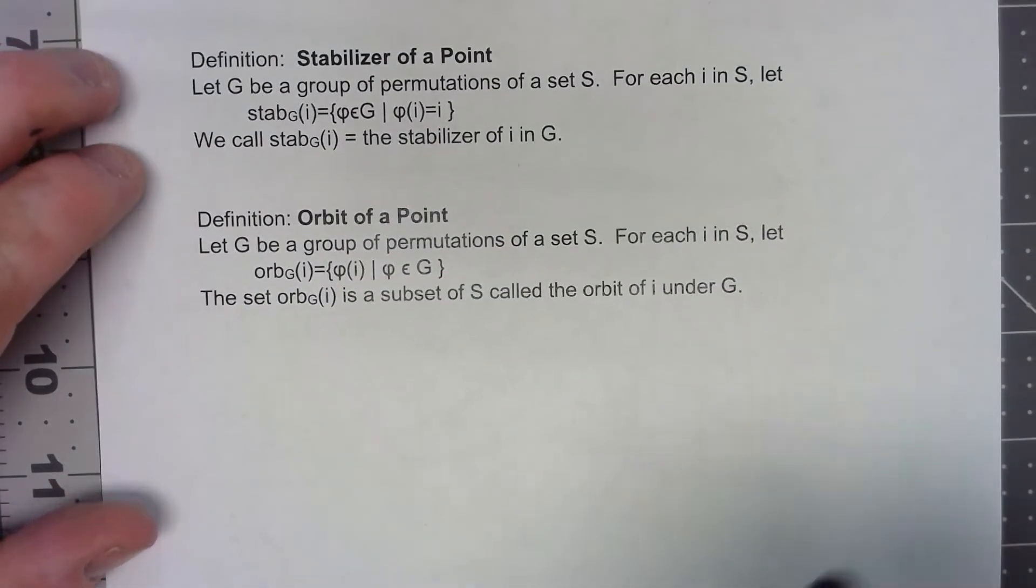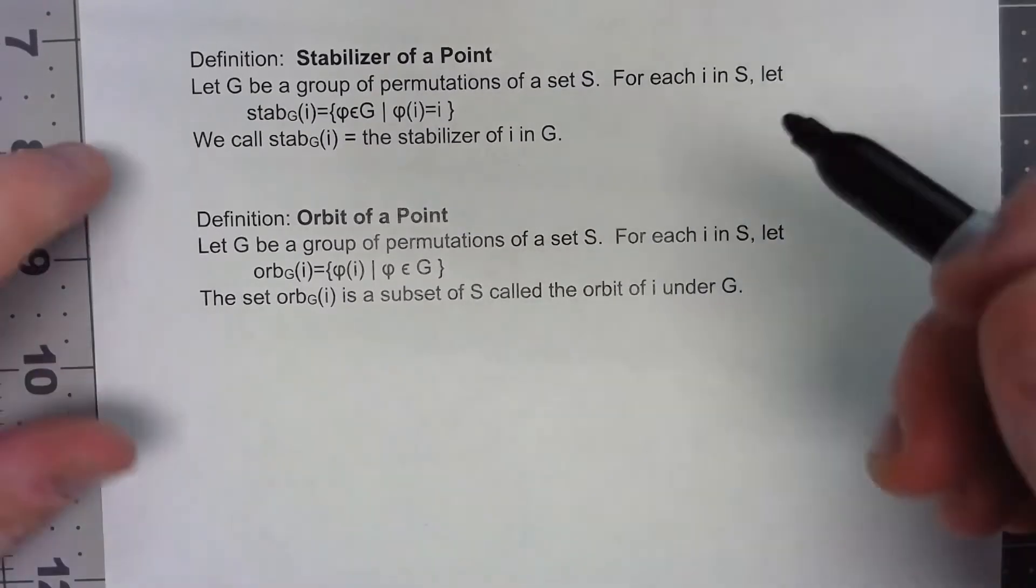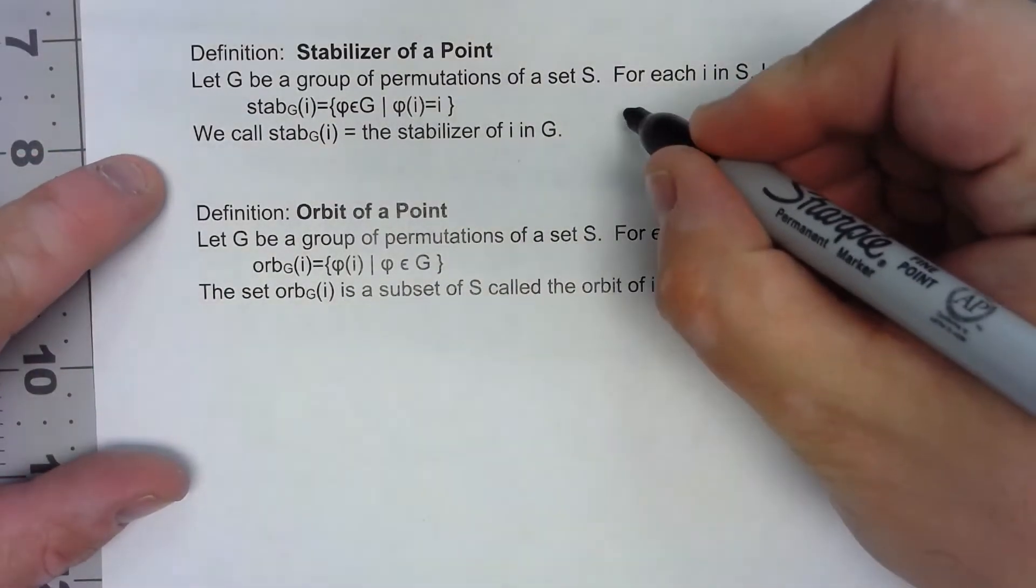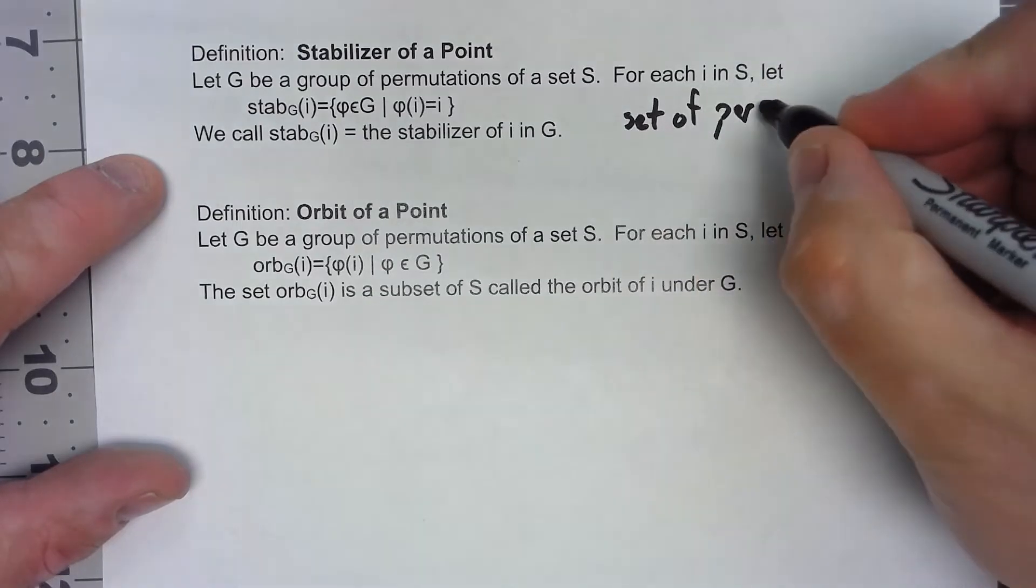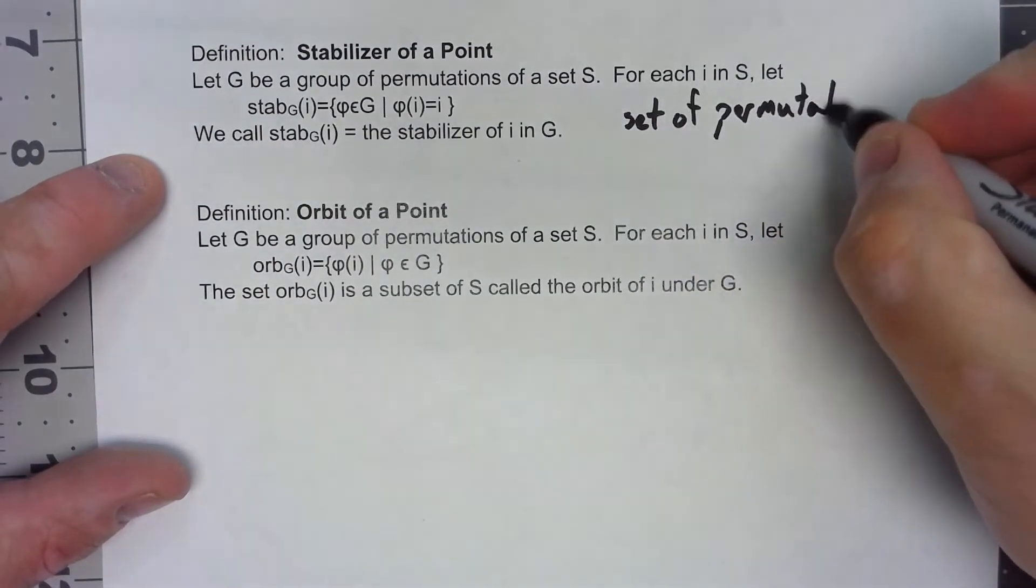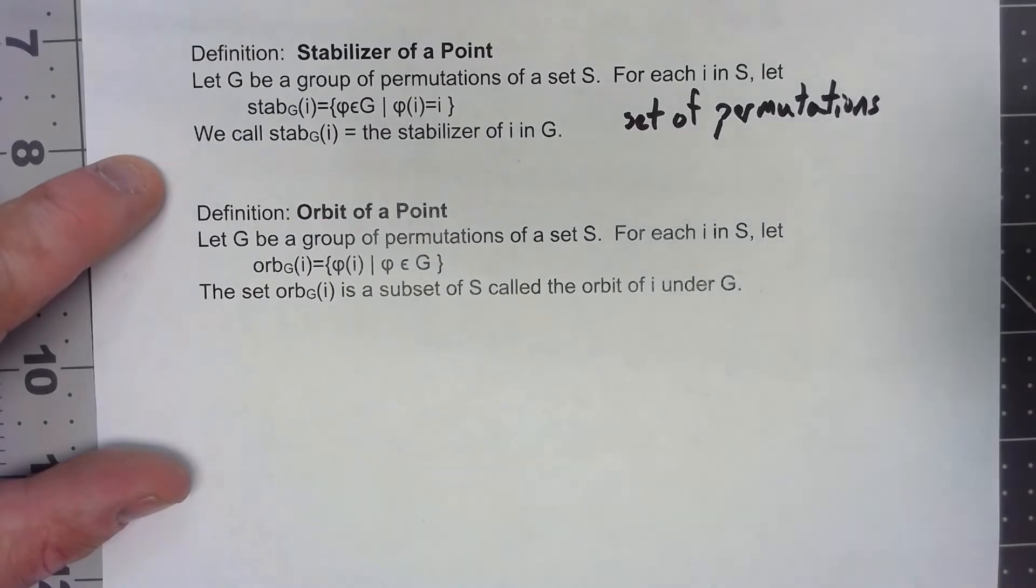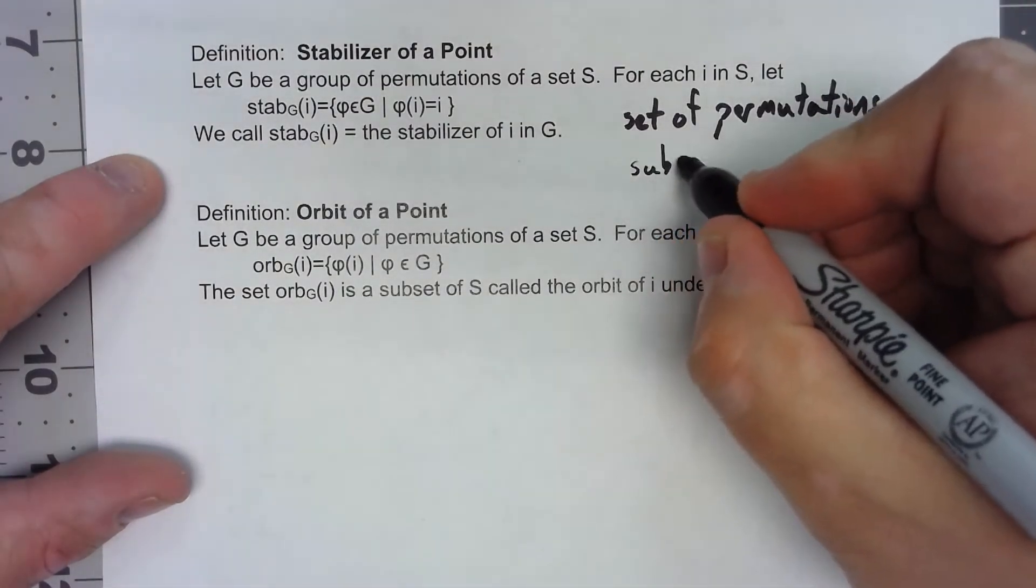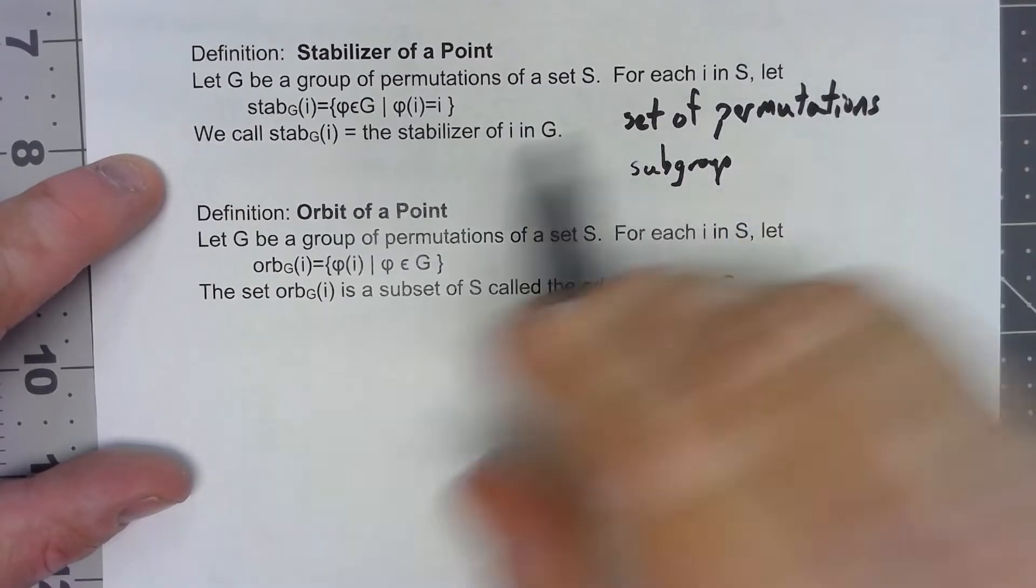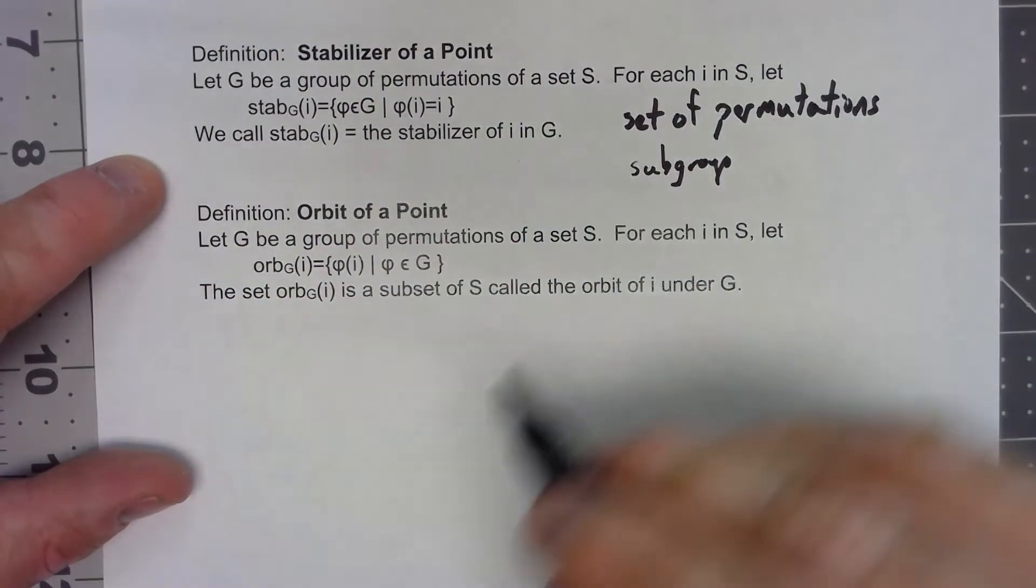Now, the big thing to realize is that this is a set of permutations. In fact, it will be a subgroup of the group of permutations we start with.